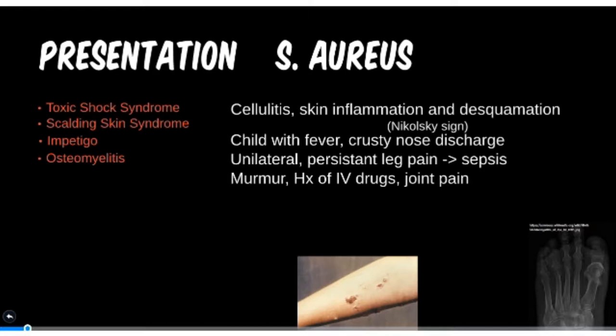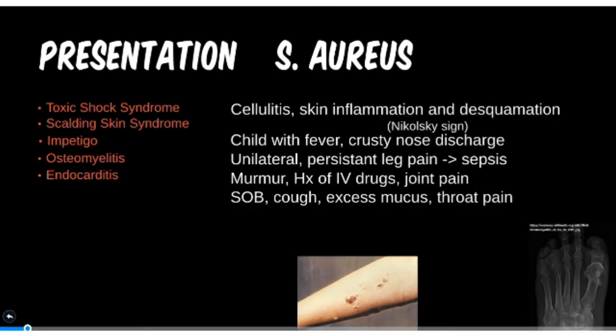What about a murmur, history of IV drug use, and joint pain? I'm sure you were thinking the murmur must be related to heart disease — of course this is one of our pathogens that cause endocarditis. How many others can you remember that cause endocarditis? Shortness of breath, cough, excessive mucus production, and throat pain — this is most likely a possible tracheitis culprit. Staph doesn't have to travel all that far from the nose to get to that area.